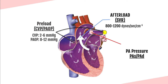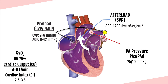Cardiac output is how many liters of blood your heart pumps out per minute — normally 4 to 6 liters per minute. The cardiac index is your cardiac output modified to account for body surface area, making it a bit more accurate. You'll generally see cardiac index used on the CCRN, but you should also know the normal range for cardiac output, as that may appear on the exam as well.